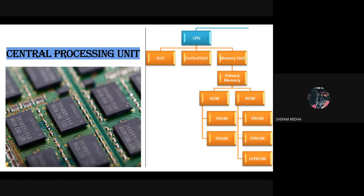Hello everyone, I am Shivam Midda. Today I am going to tell you what is CPU and what is primary memory. CPU stands for Central Processing Unit and it is also known as the brain of the computer. The CPU is further divided into three parts: first ALU, second CU, and finally MU.